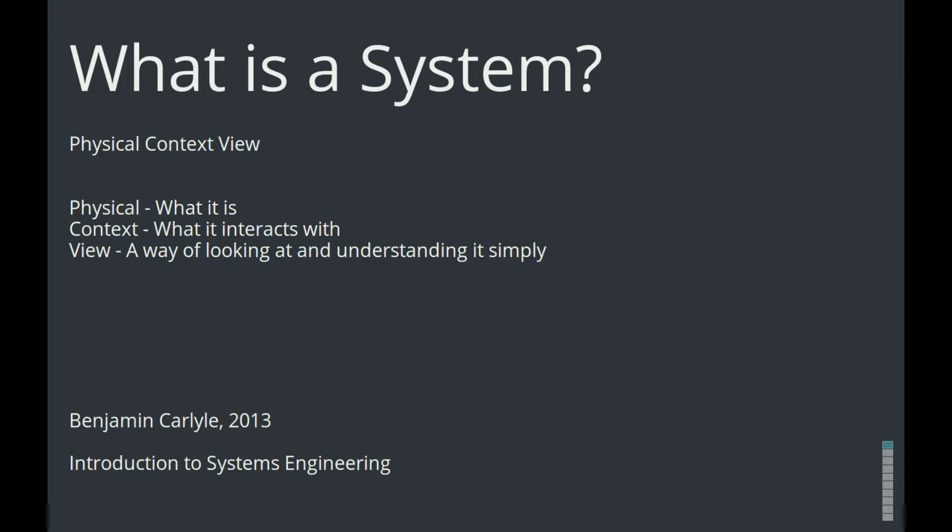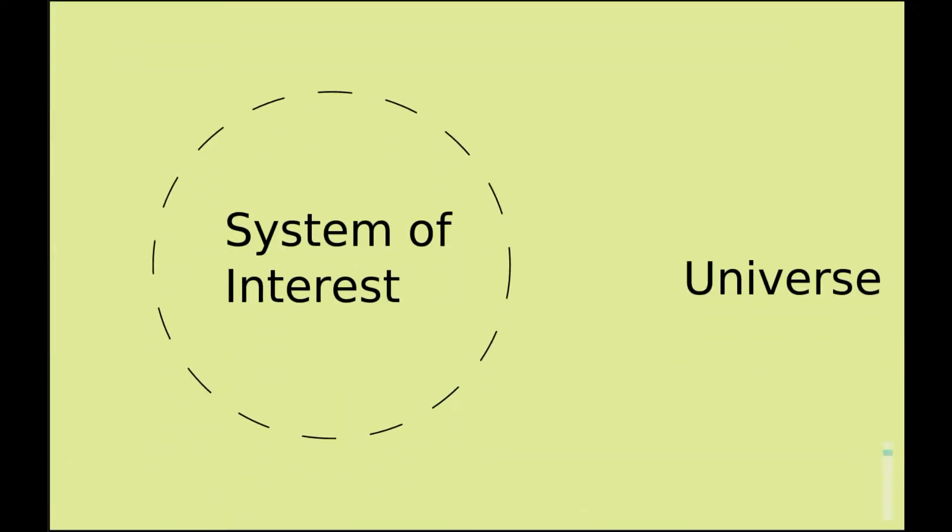When you have a system, there are things inside the system, and there are things outside the system. We have a system of interest, and outside of the system of interest, what is there? There's a universe.